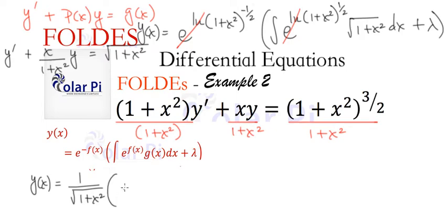And then times the integral of what? This is just root 1 plus x squared, and that's root 1 plus x squared. So when we multiply them, we just get 1 plus x squared. Because it's the square root of 1 plus x squared times square root of 1 plus x squared, dx, and then plus lambda.